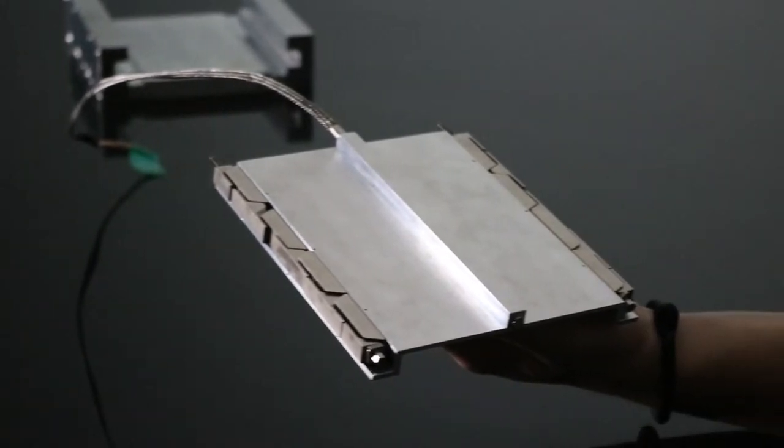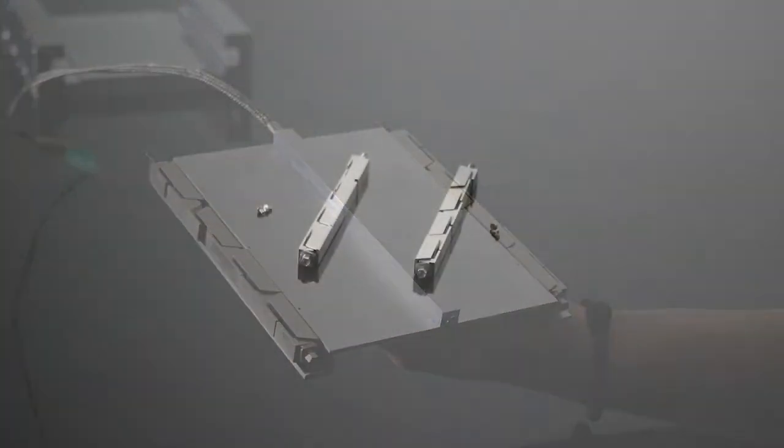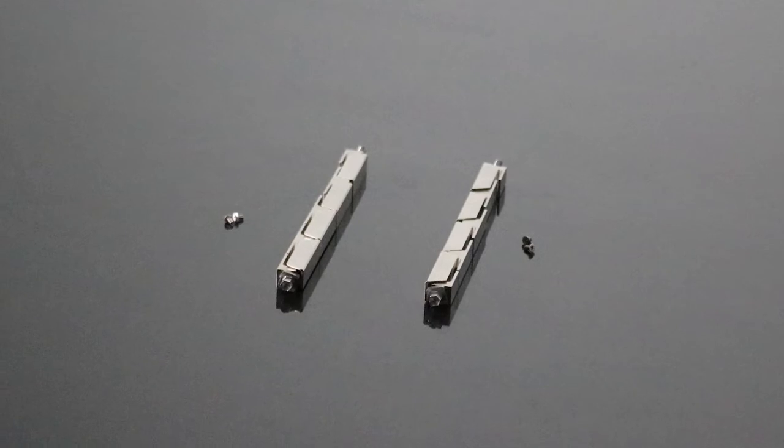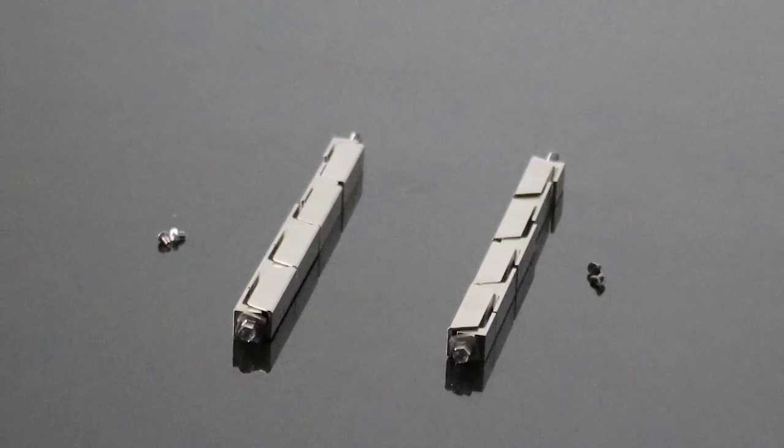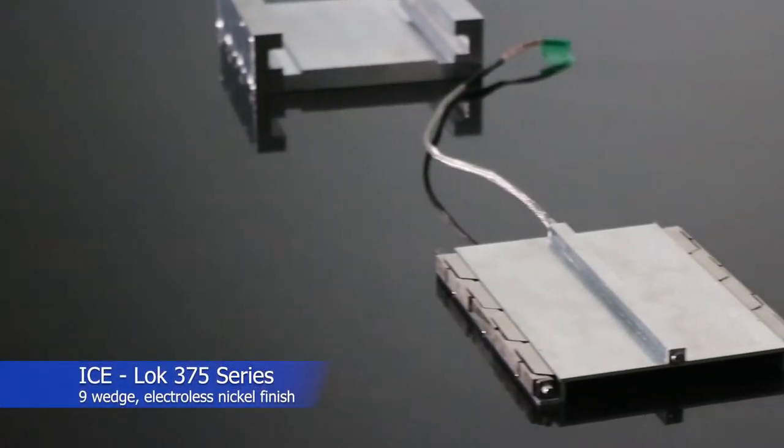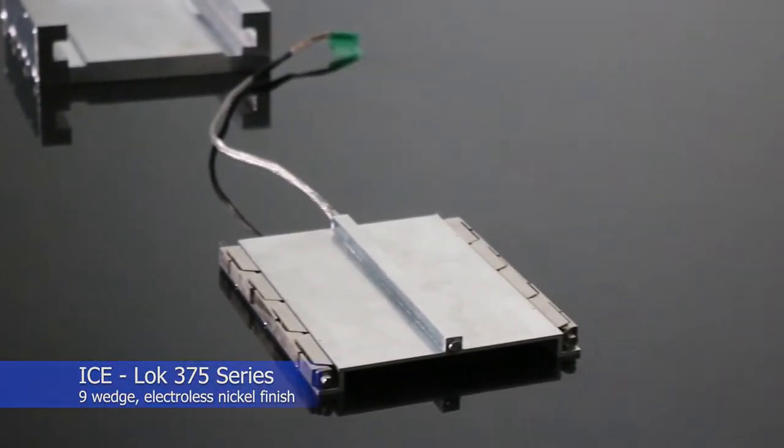Hi there. Today we will walk through the steps for installing our ACT ice lock. The current ice lock configuration at hand is a 375 series 9 wedge with an electroless nickel finish.